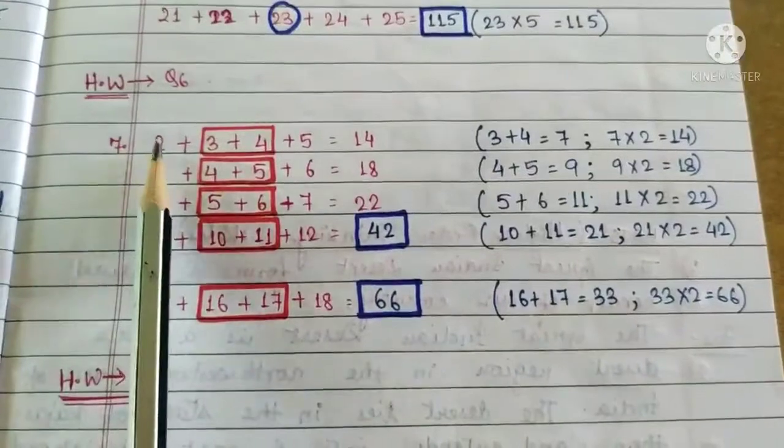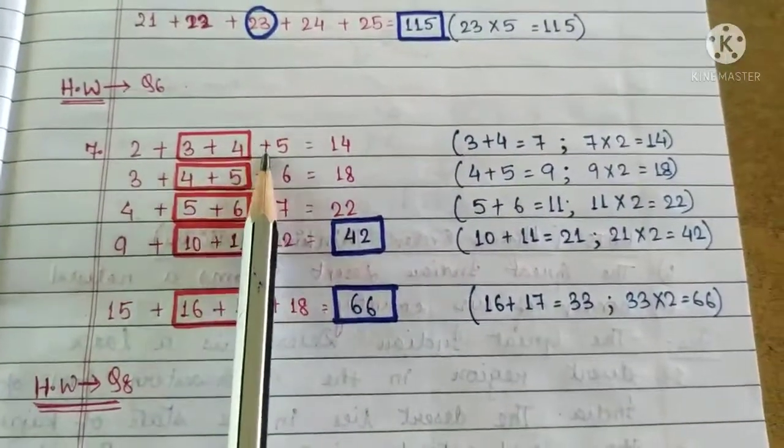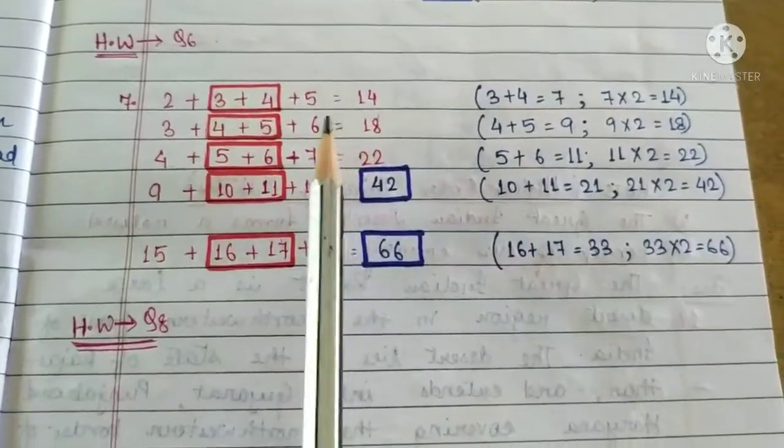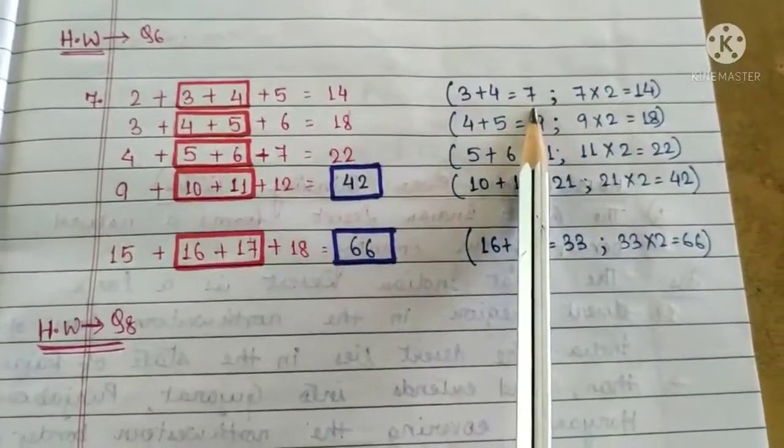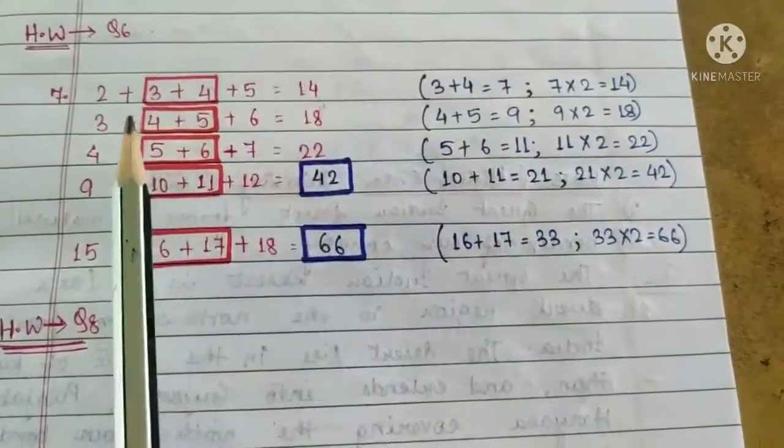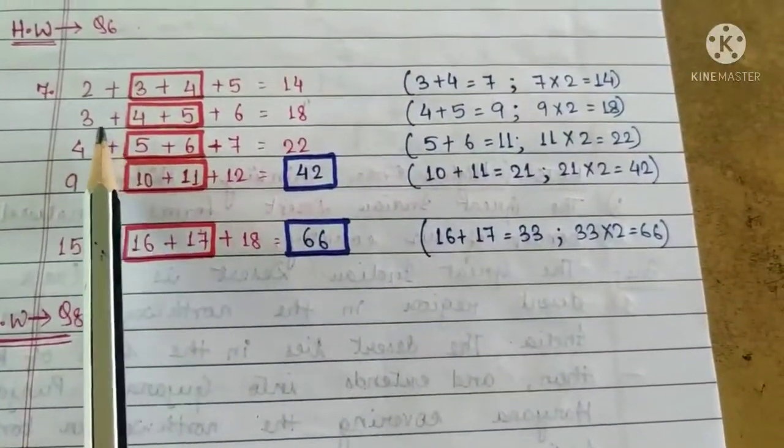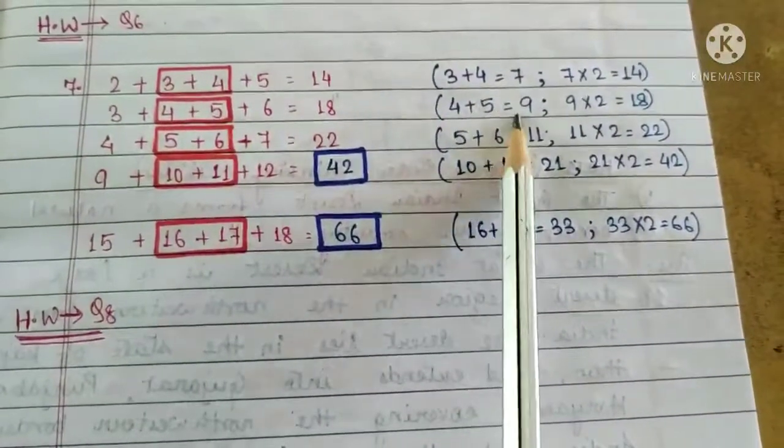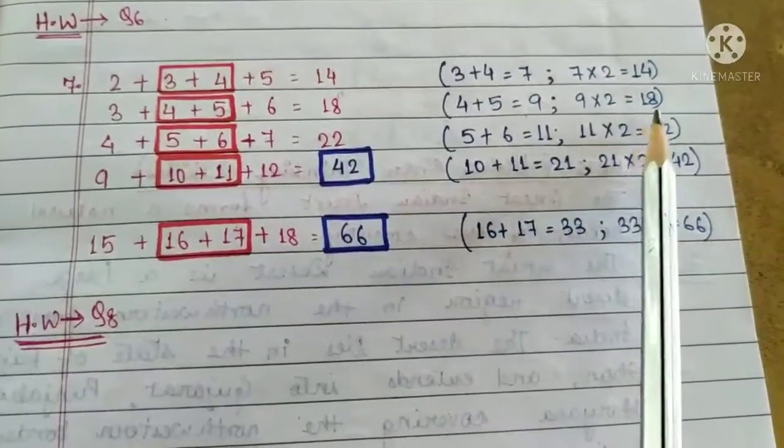Now question number 7: 2 plus 3 plus 4 plus 5 equals to 14. Now here you will see, 3 plus 4 is 7. 7 into 2 is 14. Next one, 3 plus 4 plus 5 plus 6 equals to 18. Here, 4 plus 5 is 9. 9 into 2 is 18.